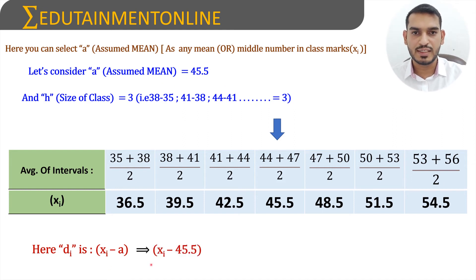So the size of the class is 3 and assumed mean is 45.5. Now di is equals to xi minus a, xi is all these values we will consider one by one which is xi minus 45.5, and now ui is xi minus a by h. So the value which is obtained here divided by the size of the class. Let us write down all these values in the table.